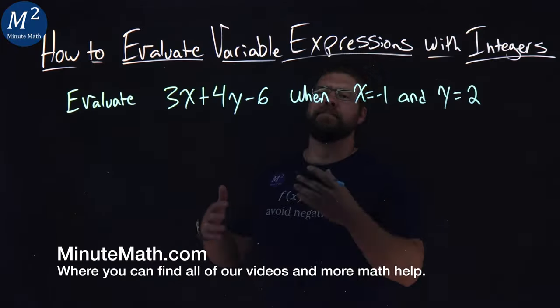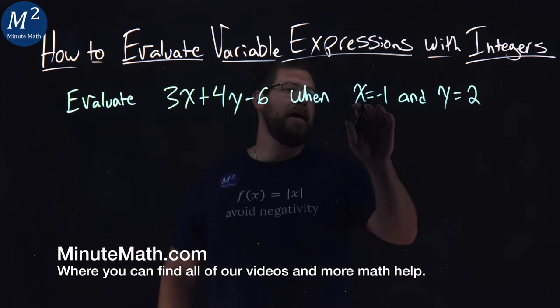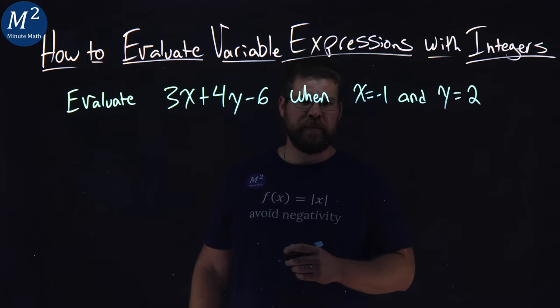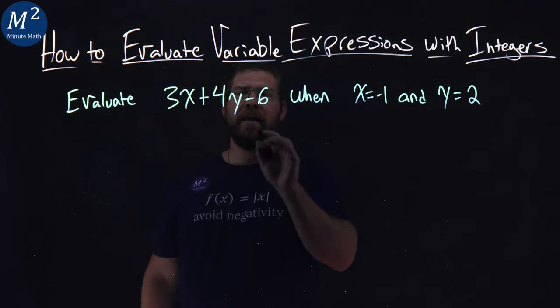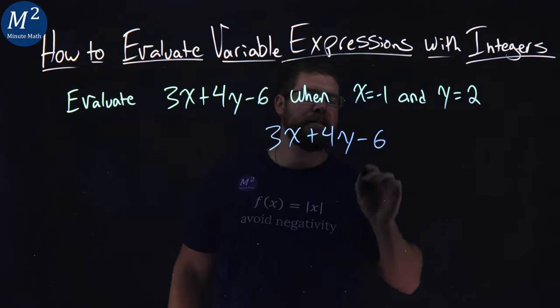We're given this problem here, evaluate 3x plus 4y minus 6 when x equals negative 1 and y equals positive 2. My first step is here, I like to rewrite my expression 3x plus 4y minus 6.